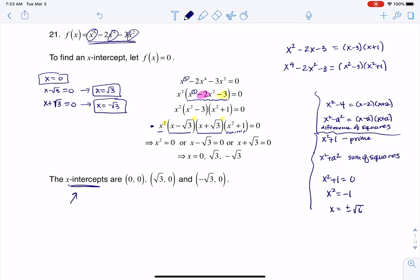Keep in mind, x-intercepts, we're always going to write as ordered pairs. So they need an x-coordinate and a y-coordinate. So that's why I'm writing 0, 0, root 3, 0, and negative root 3, 0. And those are my three x-intercepts.